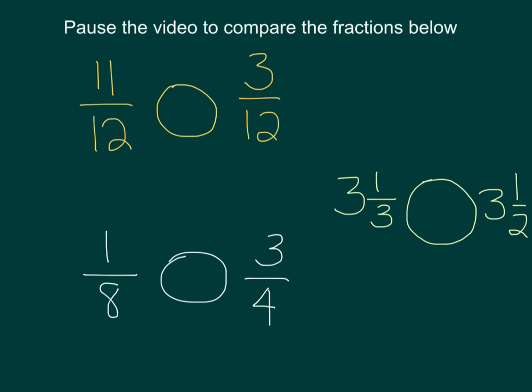Pause the video to compare the fractions below. So for the first example, you have 11 twelfths compared to 3 twelfths, and you know that this would be the less than symbol because they already have the same denominators.